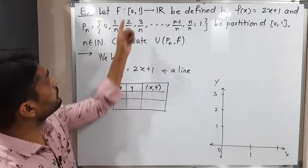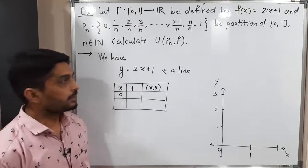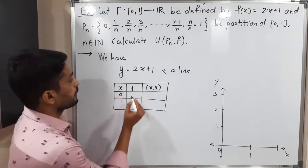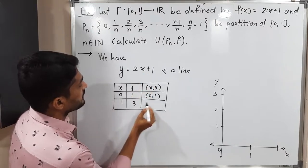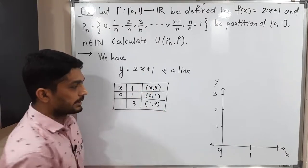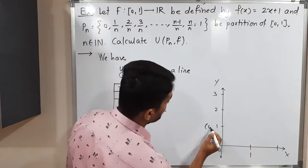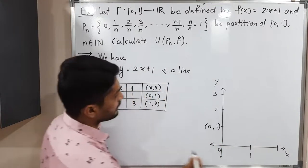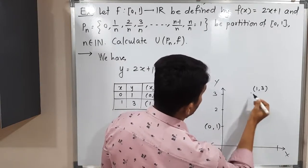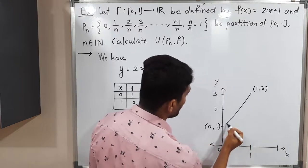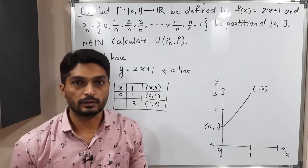I will put the starting point and ending point: 0 and 1. If x = 0, then y = 1, so the point is (0, 1). If x = 1, then y = 3, so the point is (1, 3). Plotting these: (0,1) is here and (1,3) is here. Joining them gives the line f(x) = 2x + 1.